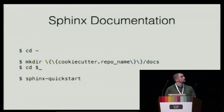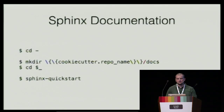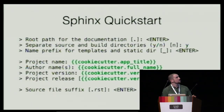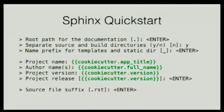Next up is Sphinx documentation — you always want to have auto-generated documentation for your source code. I'm using the Sphinx quickstart, which basically does everything for you to get started, and I literally feed the Cookiecutter variables to Sphinx. It will just put the variables inside the Sphinx documentation, so afterwards it will basically be done.